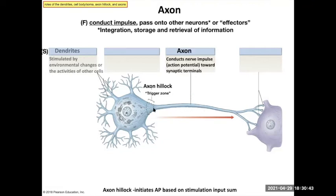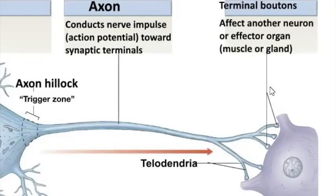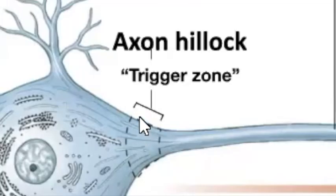It will send a very all-or-none signal called an action potential down to the split-off terminal telodendria and end up at the terminal boutons, where they are going to talk to the next cell by passing chemical signals onto it. The axon hillock is the base—in this case, the base of the cell.